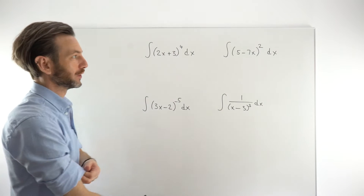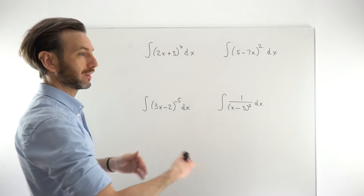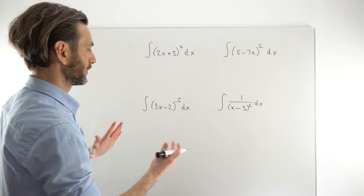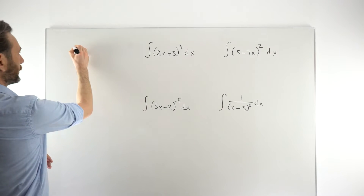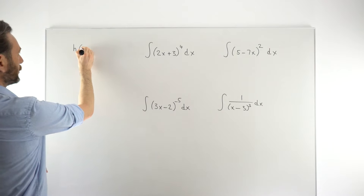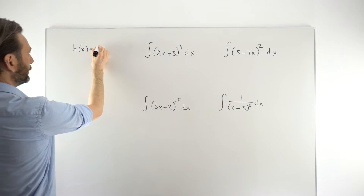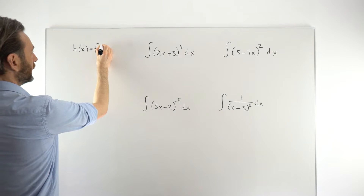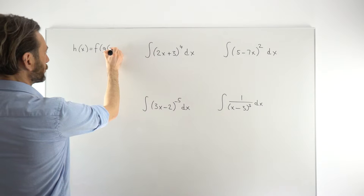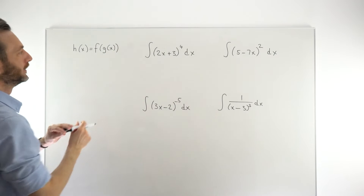This is a rule we use not for polynomials like the power rule, but for composite functions. A composite function, remember, is some function h of x which is made up from the composite — sticking together, basically, two functions, say f and g.